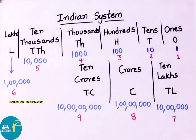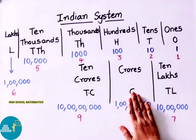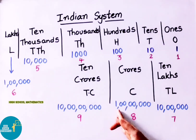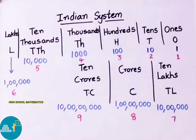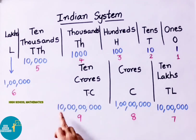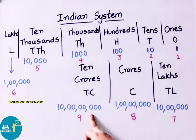Crores means one followed by seven zeros. The groups are: ones period, thousands period, lakhs period, and crores — each group is separated with a comma. Ten crores means one followed by eight zeros. Three commas are placed to separate the groups: ones period, thousands period, lakhs period, and crores.